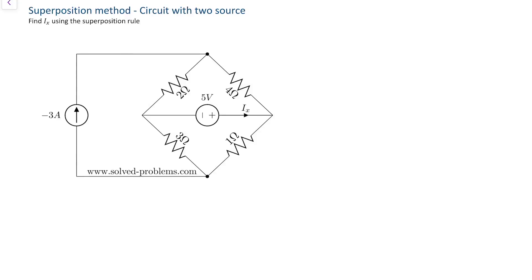Hi guys, Yas here with another solved problem in electrical circuits. Today we are going to solve a circuit using the superposition rule. We have a circuit with four resistors and two sources: one voltage source and one current source. We would like to solve the problem and find IX using the superposition rule.